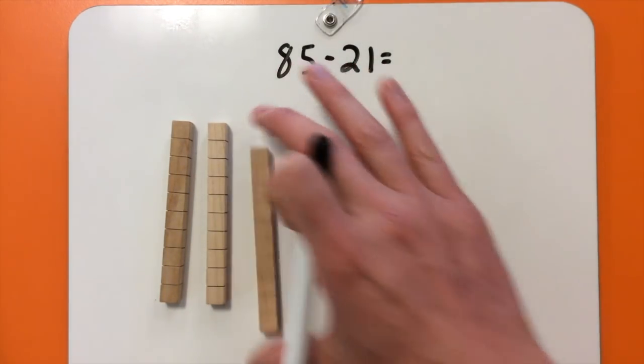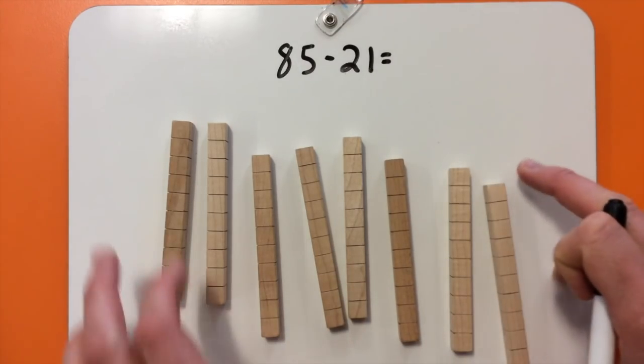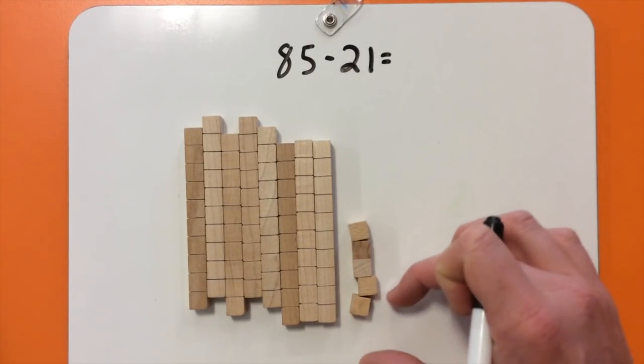10, 20, 30, 40, 50, 60, 70, 80. And I need 5 ones, which I have right there. 1, 2, 3, 4, 5.